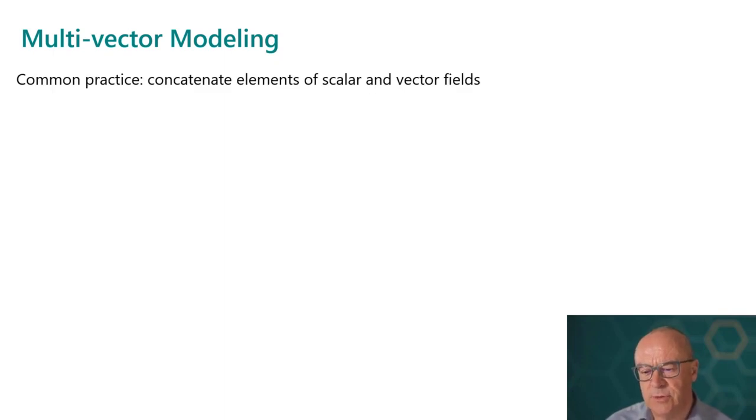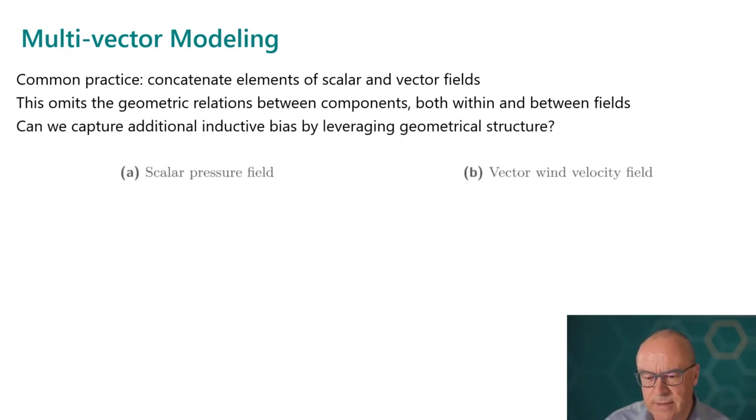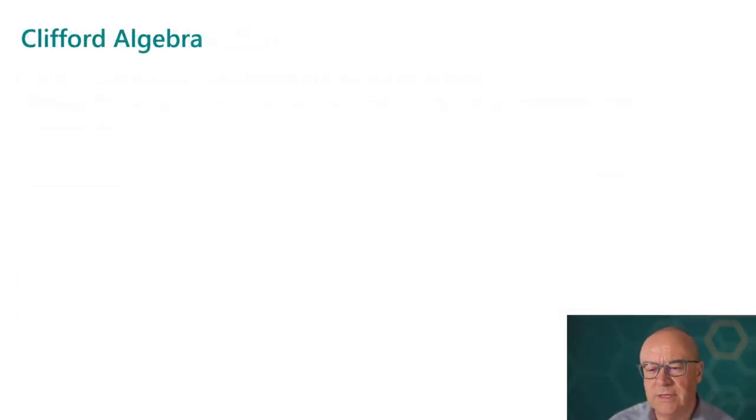So what I want to show you now is really an early look at some very exciting recent research from Microsoft Research in the use of machine learning to accelerate the solution of differential equations. And the motivation for this comes from noting that it's a pretty common practice to simply take the elements of any scalar and vector fields that might be present and just concatenate all of the elements and sort of treat them on an equal footing. And the problem with this is that it omits the geometrical relationships between these components, both within vector fields and between fields. And so the question is, can we capture some additional inductive bias by leveraging the geometrical structure? And so here's a little example from fluid flows on the left. You see the scalar pressure field for some global weather model. And on the right, you see the wind, and the wind is a vector field. And what you'll notice is there's clearly a correlation between the components of the velocity in the vector field and between the wind vector field and the scalar pressure field.